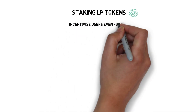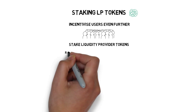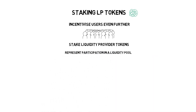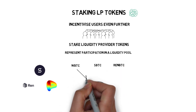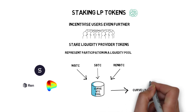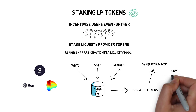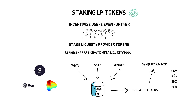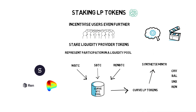Some protocols incentivize users even further by allowing them to stake their liquidity provider or LP tokens that represent their participation in a liquidity pool. As an example, Synthetix, REN and Curve got into a partnership where users can provide WBTC, sBTC and renBTC to the Curve BTC liquidity pool and receive Curve LP tokens as a reward. These tokens can be staked on Synthetix Mintr where farmers can be further rewarded in CRV, BAL, SNX and REN tokens. This is getting quite complicated, and we'll create another video to explain how liquidity pools actually work.